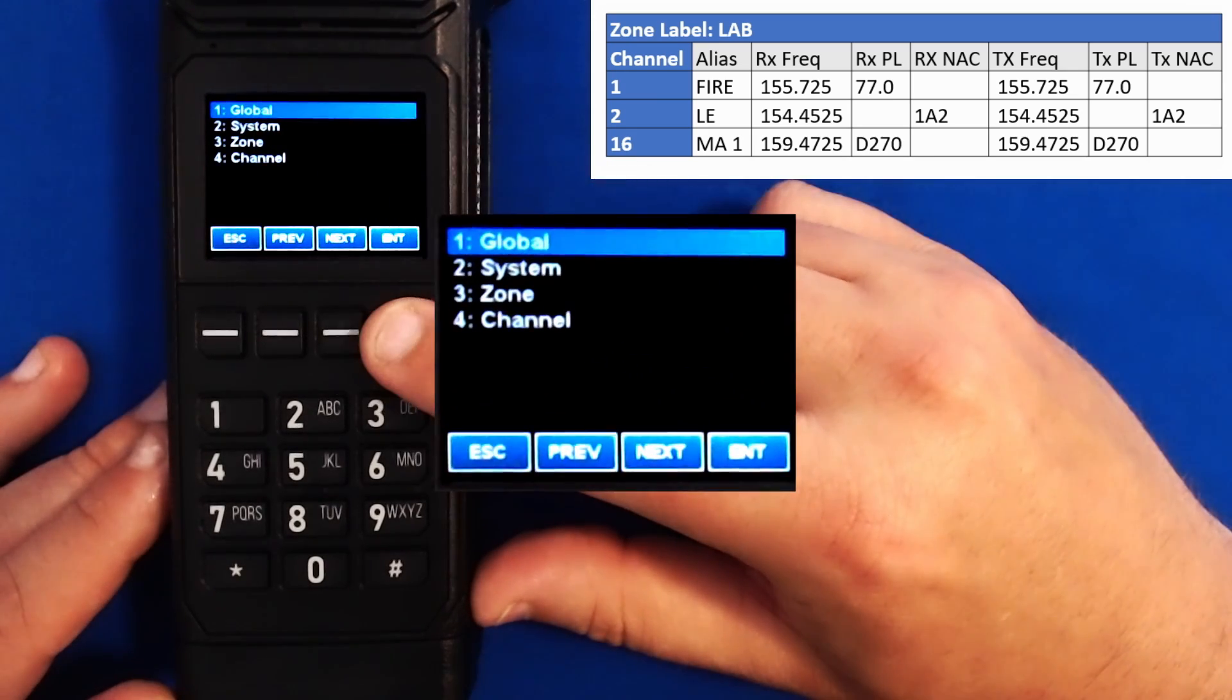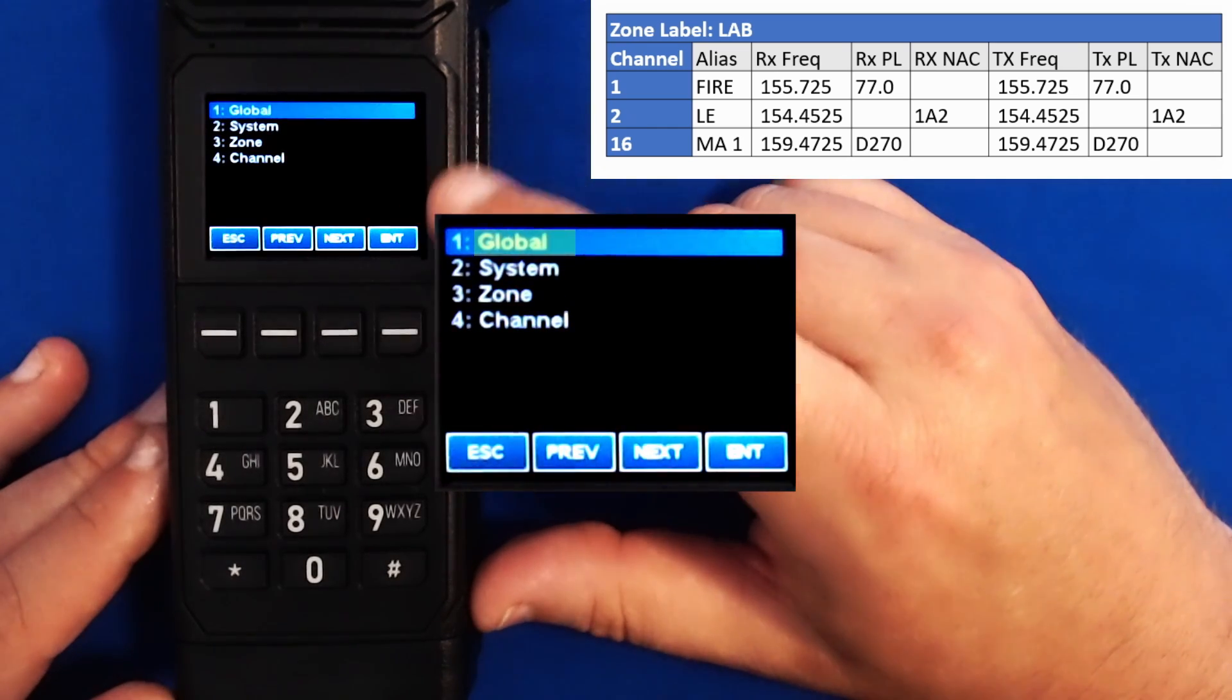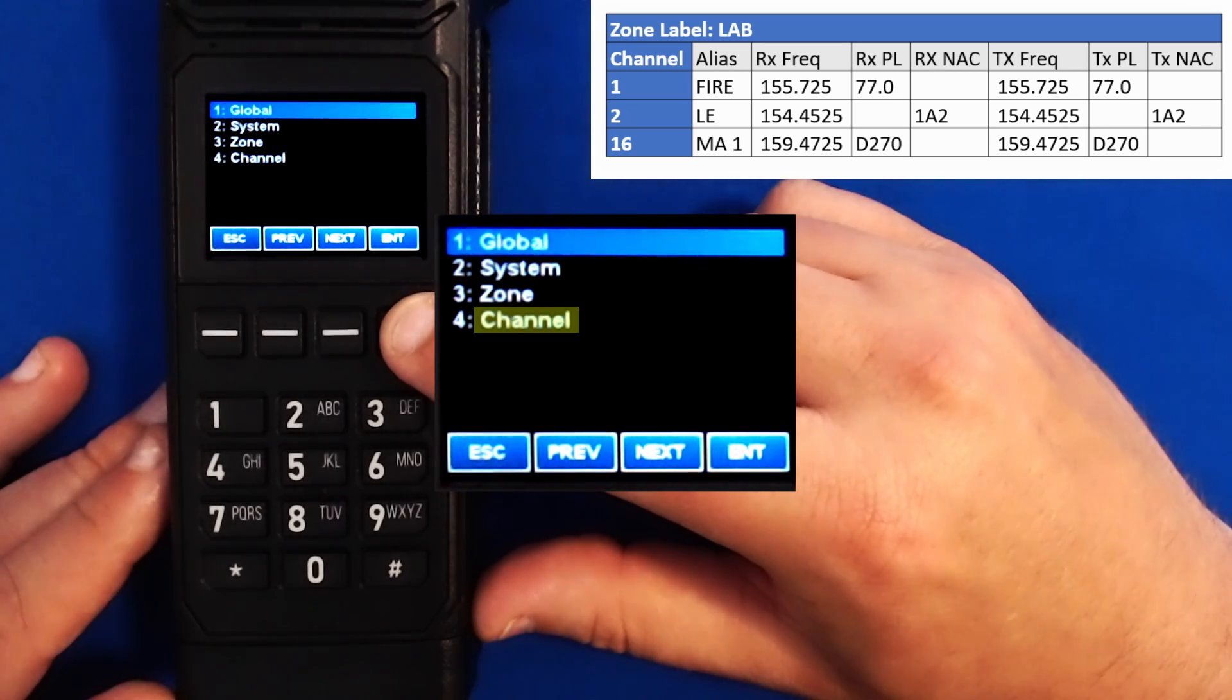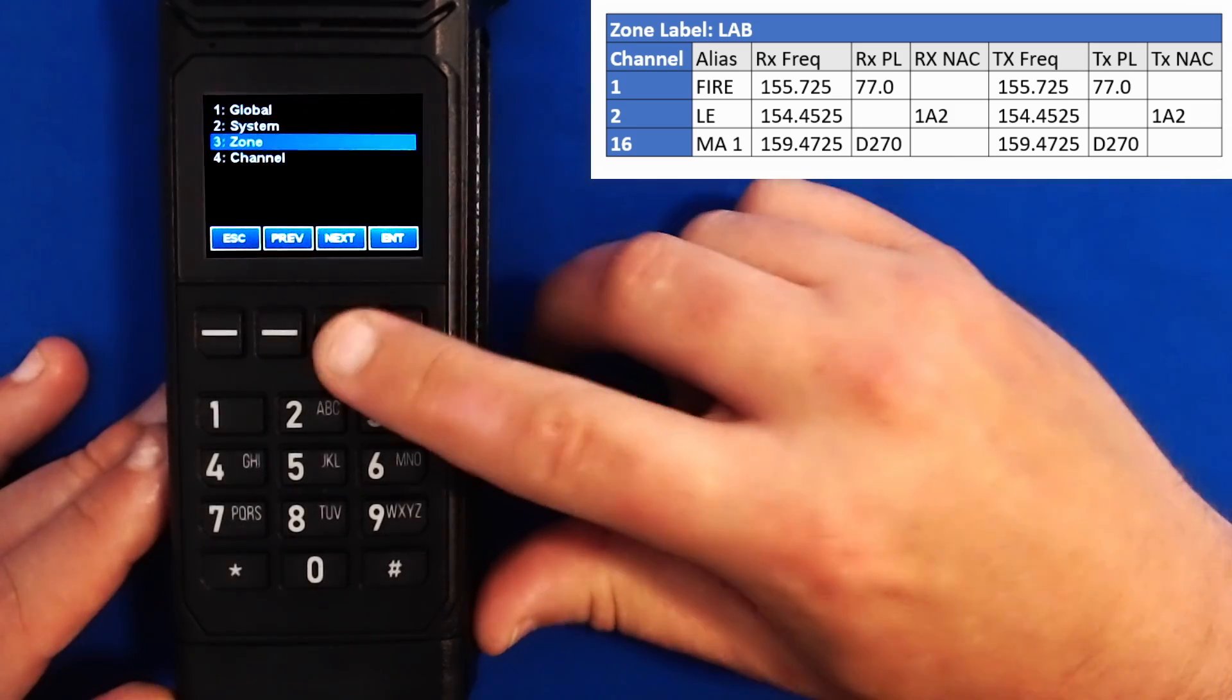You may see other options here other than keypad, but for the sake of this class demonstration we are just going to select keypad. From here you see global, system, zone, and channel. Under global we can edit the display parameters. Under system we can edit the unit ID or the priorities. Under zone we can add, edit, or delete zones, and under channels we can add, edit, or delete channels. For the sake of this demonstration let's begin by adding a zone.